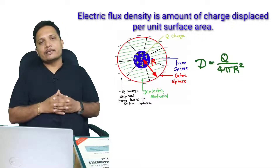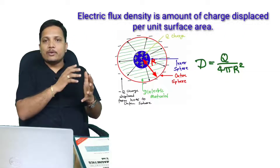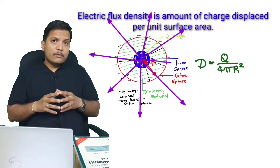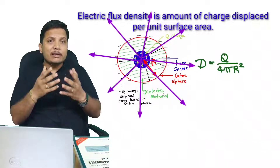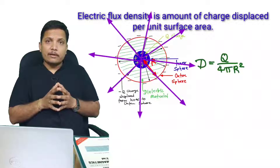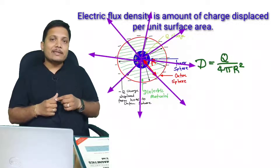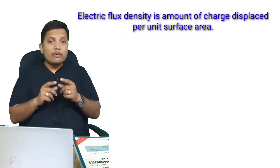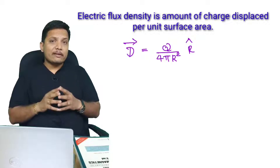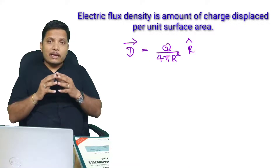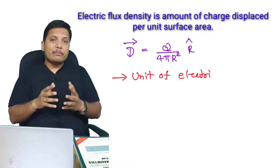The direction of electric flux density is similar to the direction of the electric field, as you can see in this figure. So electric flux density with respect to direction is q divided by 4πr² in the direction of unit vector r̂. The unit of electric flux density is coulombs per meter squared.